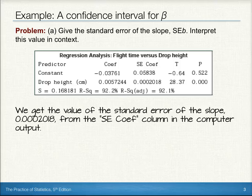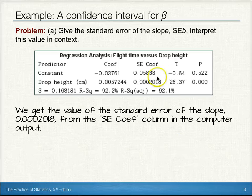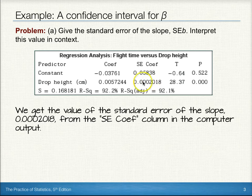Well, we get the value of the standard error of the slope from the SE coefficient column in the computer output. So looking in this particular column, we find the standard error of the slope by looking at the predictor drop height, and we see that it's 0.0002018.